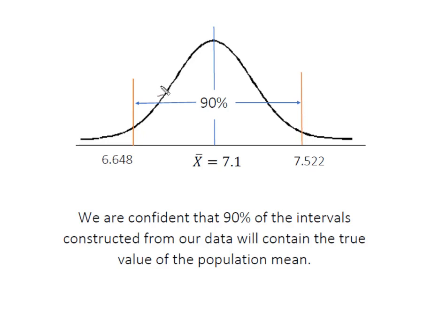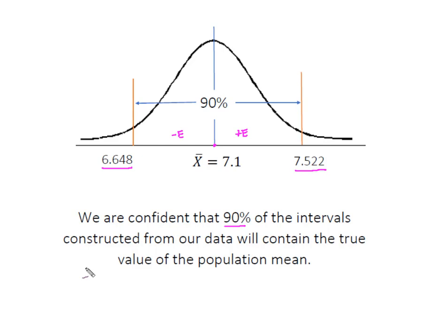Looking at the output, the confidence interval is between 6.648 pictures and 7.552 pictures. This is simply my point estimate of x-bar, plus or minus an error. We are 90% confident that 90% of the intervals constructed from our data will contain the true value of the population mean.